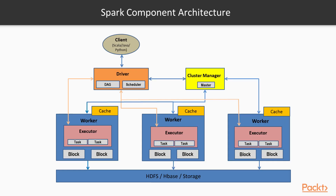A Spark Application contains several components, all of which exist whether you are running Spark on a single machine or across a cluster of hundreds or thousands of nodes. Each component has a specific role in executing a Spark program. Some roles are passive during execution, such as client components, while others are active, including components executing computation functions.